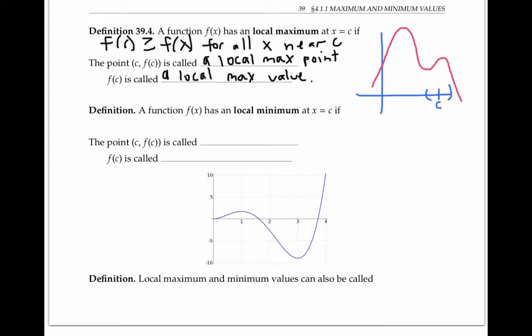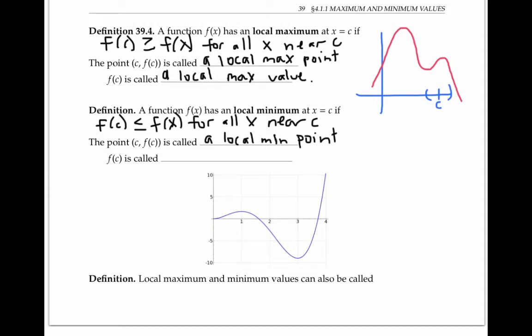Similarly, a function f of x has a local minimum at x equals c, if f of c is less than or equal to f of x for all x near c. The point c, f of c is called a local minimum point, and the y value f of c is called a local minimum value.